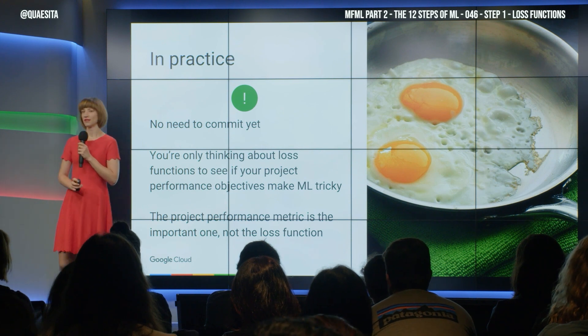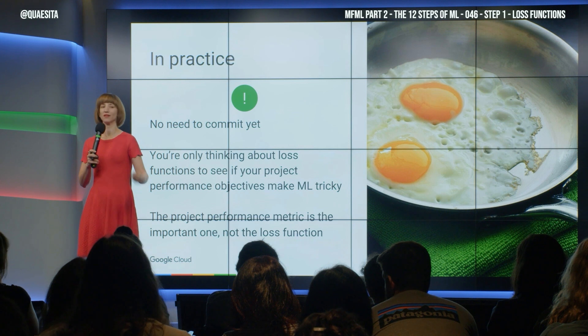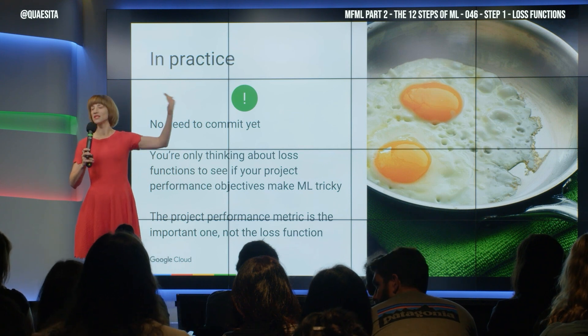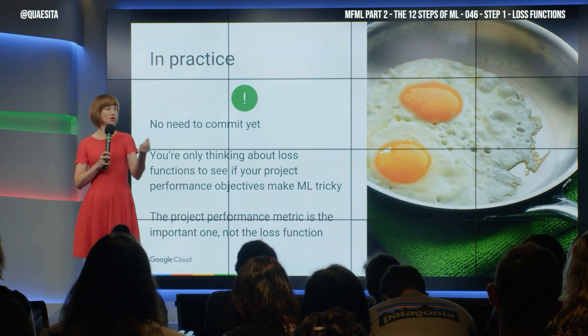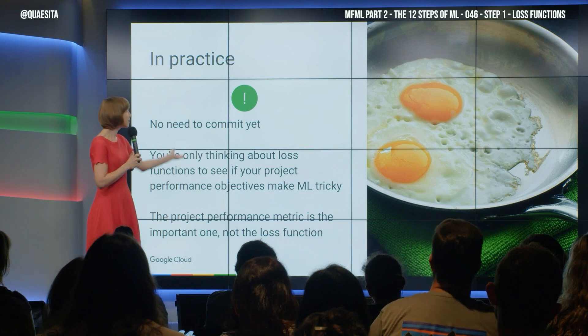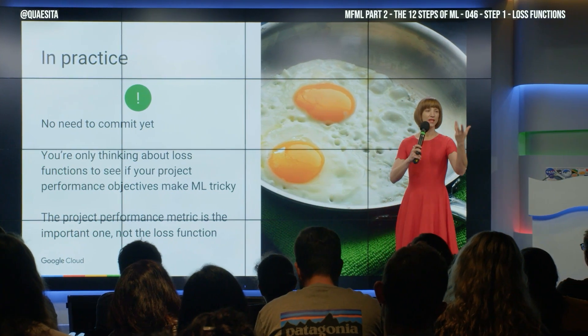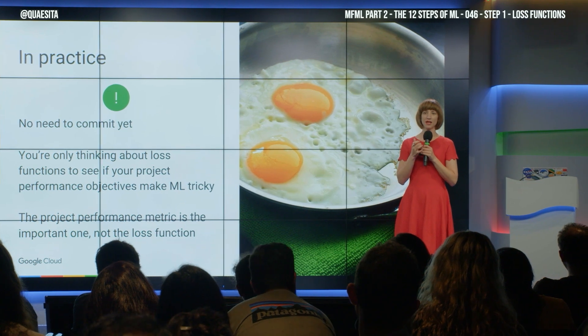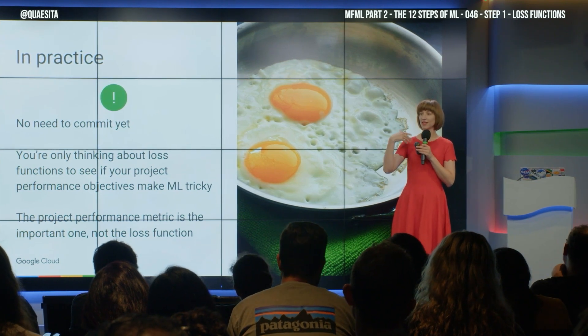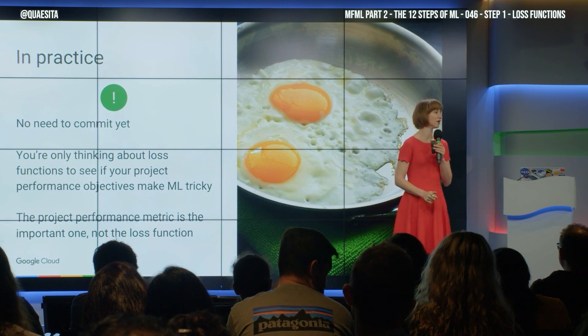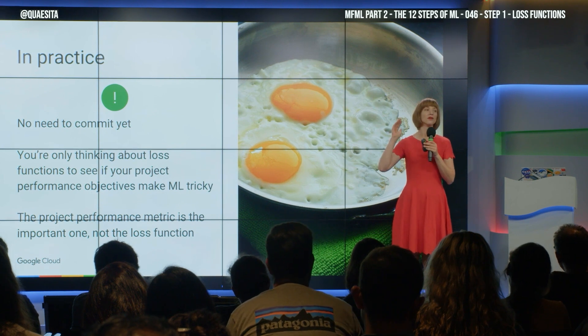Now, there's no need to commit yet. You'd be crazy to say you're definitely going to use the cross-entropy loss function, because you are a long way away from selecting your algorithm — that happens way later in the process. And you don't know what the actual loss function is going to be implemented in that algorithm. So why am I even making you do this? To make sure you're not asking for the moon. After you've developed your business performance metric, it may happen that there is no classic standard loss function that captures the idea there. And if that's the case, machine learning is going to be really, really hard. Maybe you should back away slowly, or maybe go to the researchers and start talking about making a customized algorithm around what you, the business decision-maker, care about.